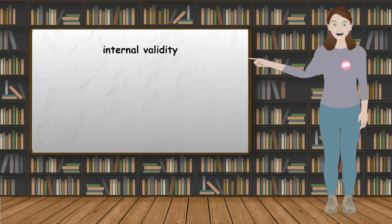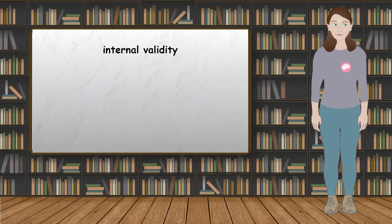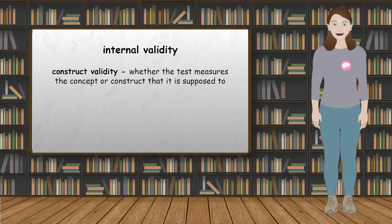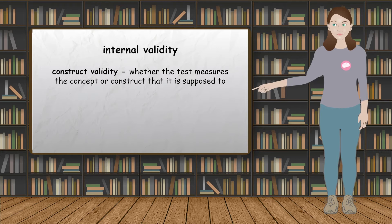There are two types of internal validity. Construct validity, which is whether the test measures the concept or construct that it is supposed to — for example, IQ tests measuring intelligence.